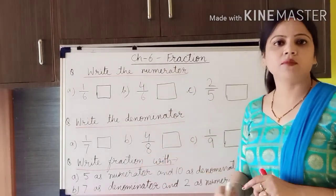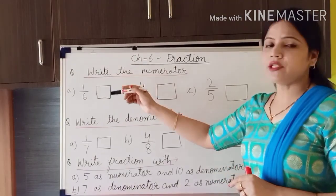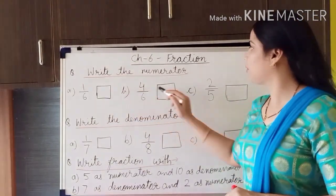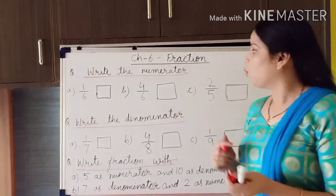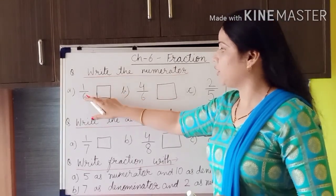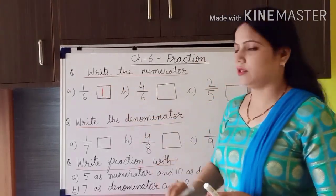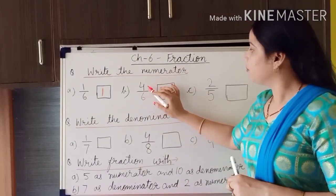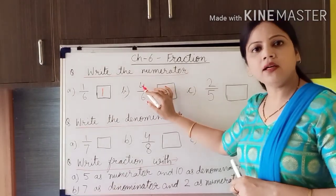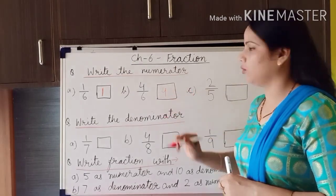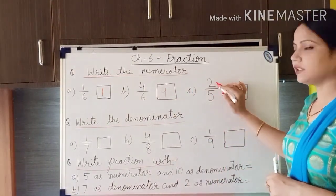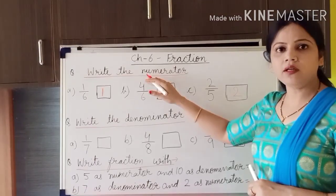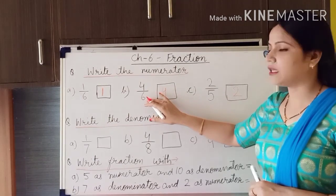As you can see I have written some questions. The first question is: write the numerator. I have given three questions A, B, and C. The first one is 1 by 6 — which is the numerator, 1 or 6? Yes, 1 is the numerator. The upper part is always called the numerator. For B, 4 by 6 — we look at the topmost number, which is 4. For C, 2 by 5 — this 2 is the numerator, so we write 2. Numerator means the top number, and denominator means the number written at the bottom.